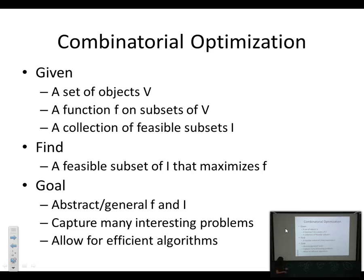Here is the perspective we're interested in — a standard combinatorial optimization viewpoint. The basic premise is that we have some finite ground set of elements to optimize over, some function that tells us how good various subsets are, and some constraints so that not all subsets are feasible. Our goal is to find one of these feasible subsets that maximizes our objective function. There's an inherent tension between the generality of this framework and the need for very efficient algorithms.